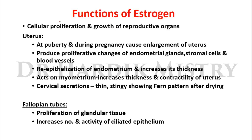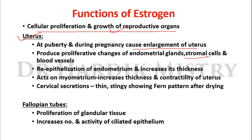The functions of estrogen: estrogen causes proliferation of cells and growth of reproductive organs. At puberty and during pregnancy, it causes enlargement of the uterus. It produces proliferative changes in the endometrial glands, stromal cells, and blood vessels.